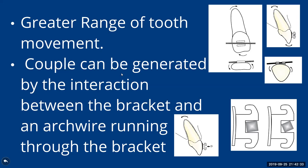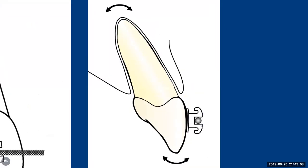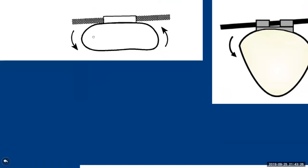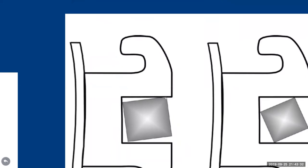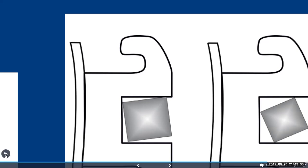The type of tooth movement depends on where the center of rotation is located. With fixed appliances, we can control the center of rotation to execute bodily tooth movement, extrusion, intrusion, or any kind of movement. This is achieved by generation of a couple. Removable appliances cannot generate a couple because they use a round wire, providing only a single point of contact. Even in fixed appliances, using a round wire gives only tipping; to generate a moment, a rectangular wire must be used.